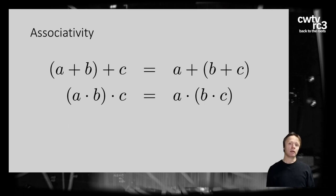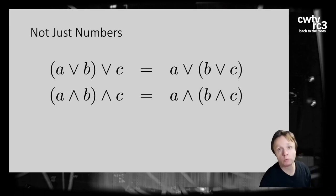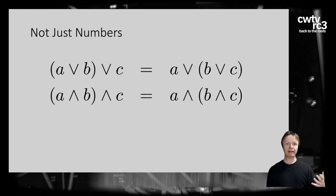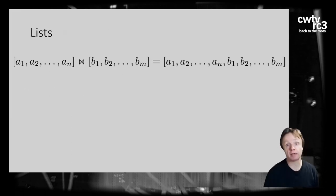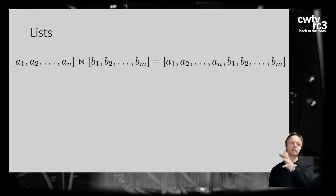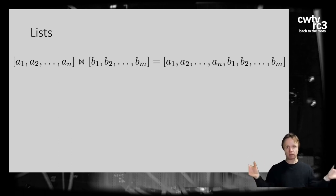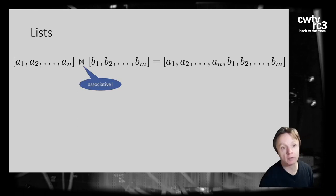Associativity is not restricted to numbers. Here are two Boolean equations specifying associativity for Boolean OR and AND: with three Boolean values, it doesn't matter which way you OR them — you always get the same result. The same works for Boolean AND. You can also have structured values — for example, a list data structure. If you concatenate two lists, that concatenation operation is also associative.